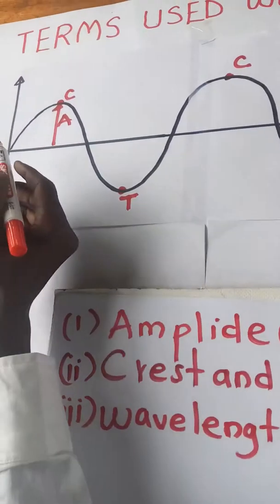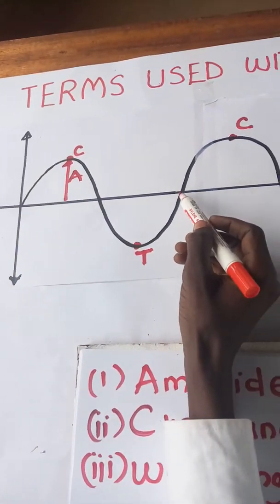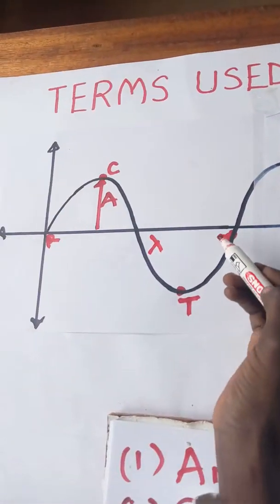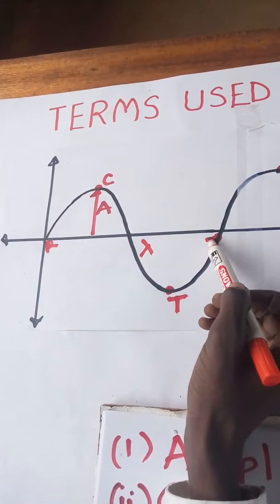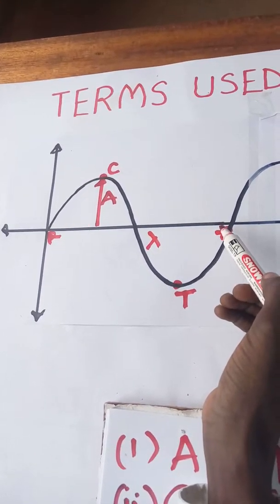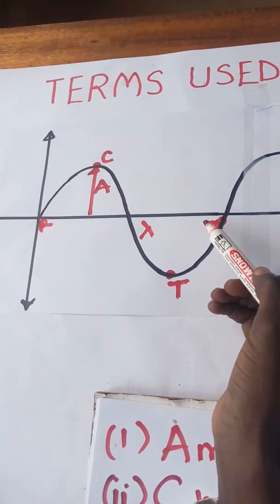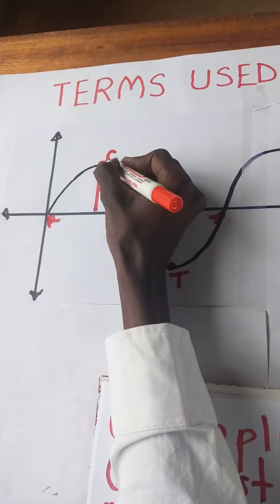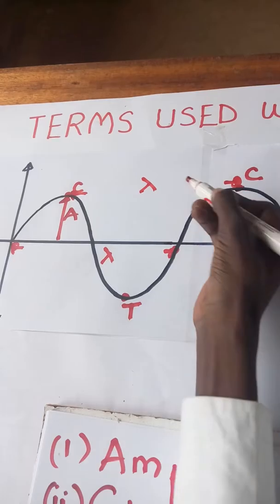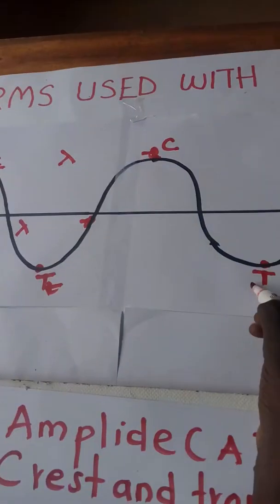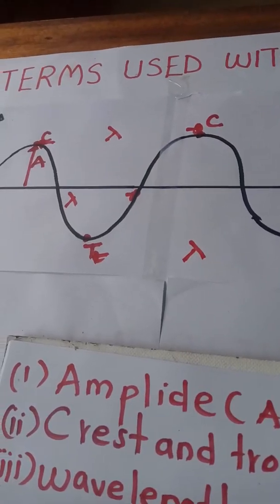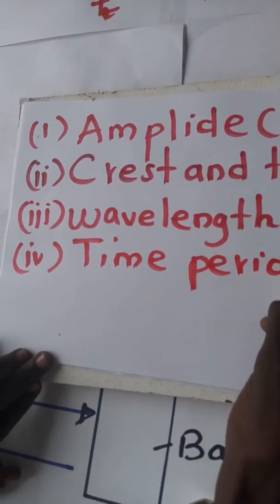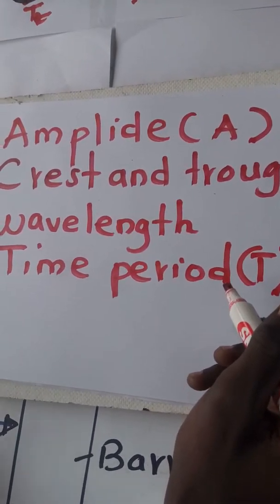We also have the term wavelength. Wavelength is the distance travelled by a wave to complete one full cycle. So if a wave travels from this point to this point, that is a complete cycle and that distance is a wavelength — comprising one half cycle and another half cycle. Another definition: wavelength is the distance between two successive crests or two successive troughs.